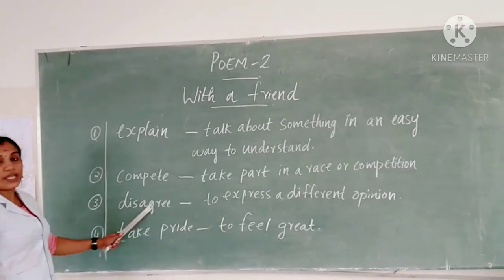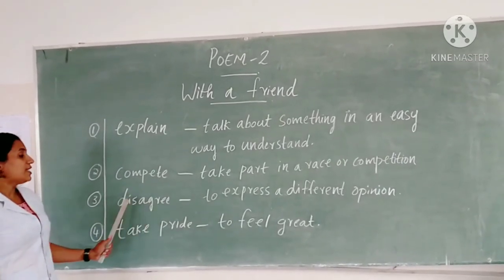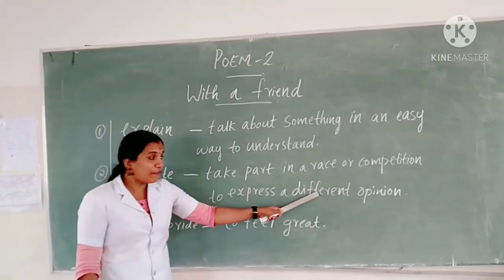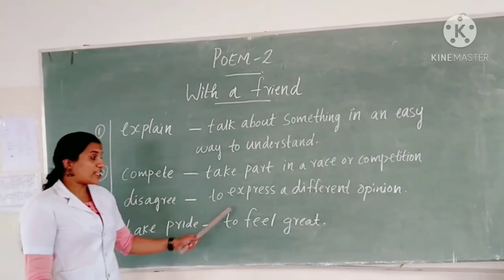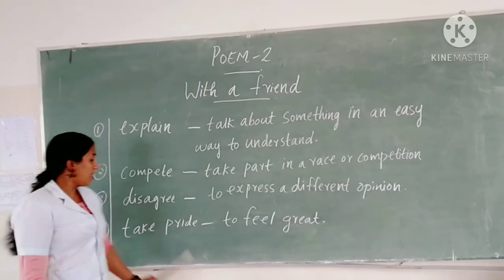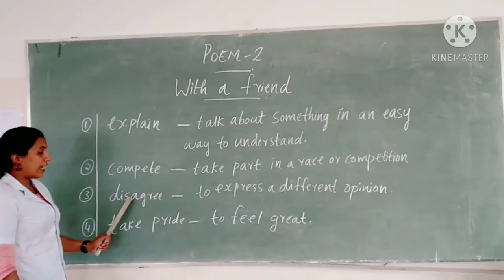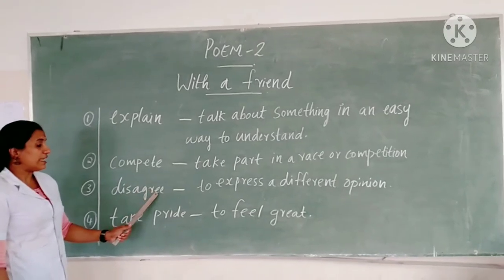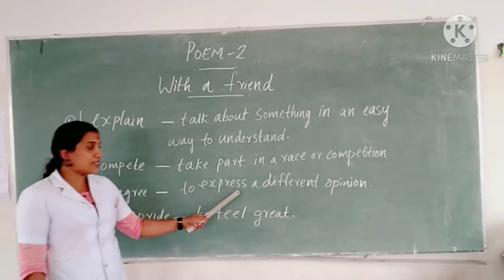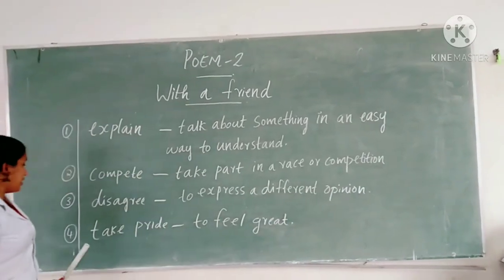Third one: disagree. Disagree — the opposite of agree. Disagree means to express a different opinion. Spelling: D-R-S-A-G-R-E-E. Disagree means to express a different opinion.